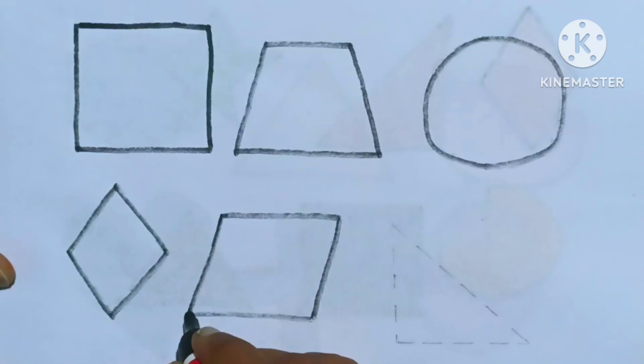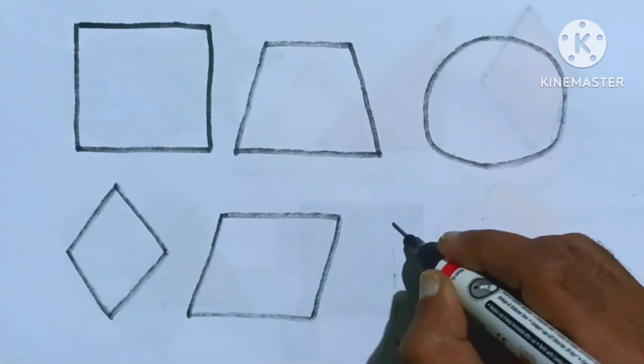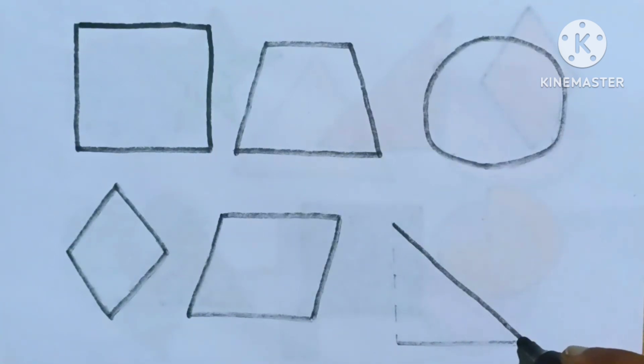Now it's a right triangle shape, kids. Let's color the shapes.